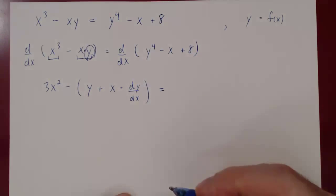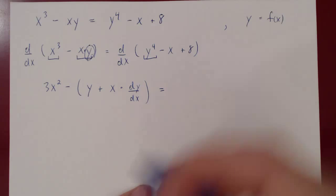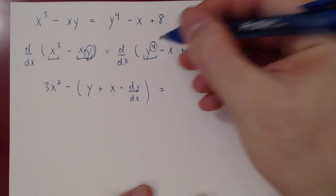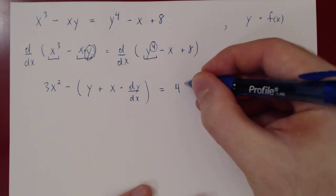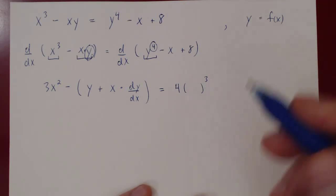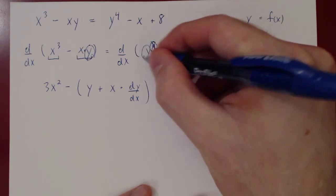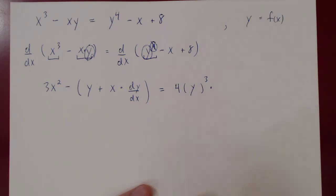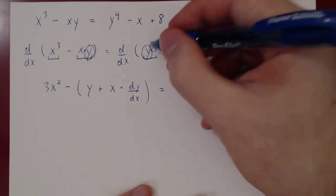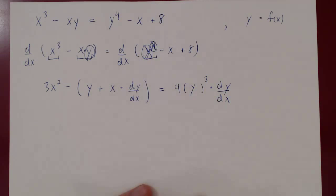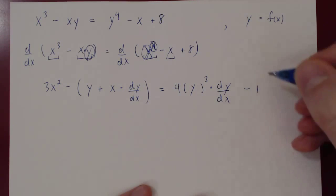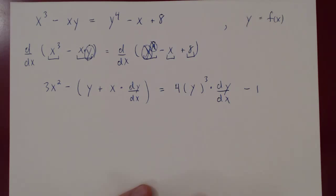Now let's differentiate the right-hand side. The derivative of y to the fourth with respect to x — be careful, this is a y term, so apply the chain rule. The outside function is the fourth power: apply the power rule to get 4, bring the power down, subtract 1 from the exponent to get y cubed, times the derivative of y with respect to x, which is dy/dx. Then minus the derivative of x, which is 1, plus the derivative of 8, which is 0 since 8 is a constant.